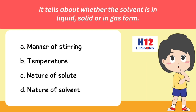It tells about whether the solvent is in liquid, solid, or gas form. A. Manner of stirring. B. Temperature. C. Nature of solute. D. Nature of solvent.